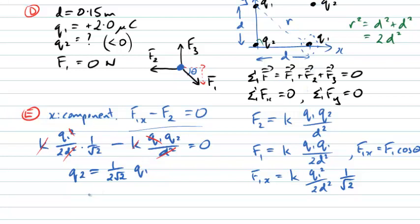So I can now just plug in a value here. This is 1 over 2 root 2 times what I was told it was, 2 microcoulombs, 2 times 10 to the minus 6 coulombs. And if I do that calculation, or if you do that calculation, you should find that comes out to be 0.71 microcoulombs. So that's our answer to the question there.